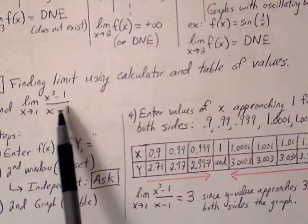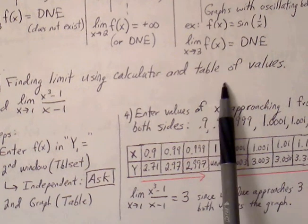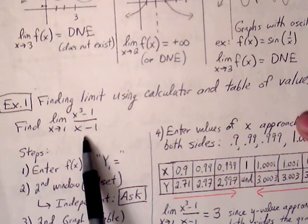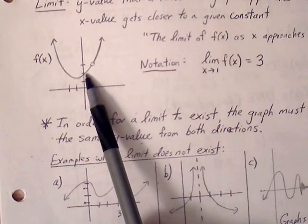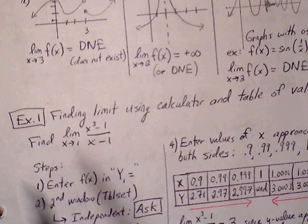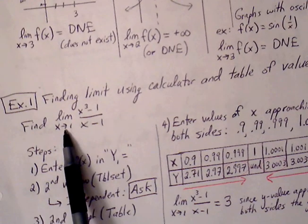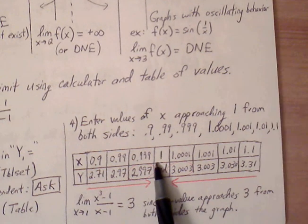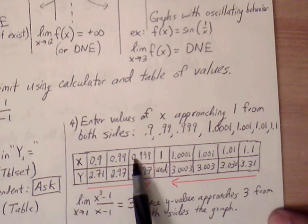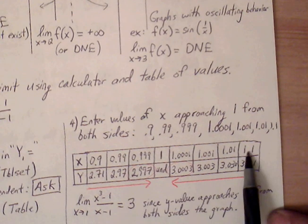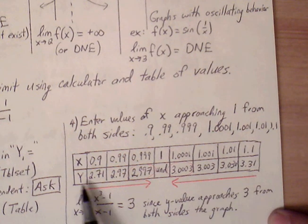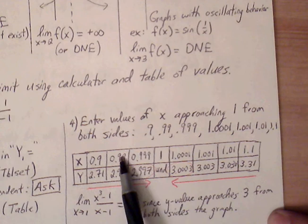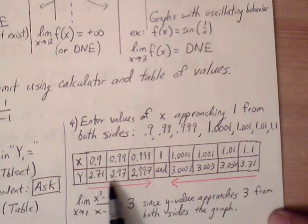We can also find the limit using a table of values. Going back to the graph we started with — x³ minus 1 over x minus 1 — if we pick values close to 1 from the left side as well as from the right side, we get a table of values. Approaching from the left: 0.9, 0.99, 0.999; from the right: 1.1, 1.01, 1.001. We look at the behavior of the y-values and can conclude that as x approaches 1, the y-value is approaching 3.